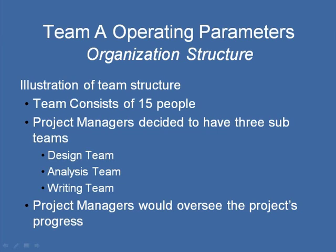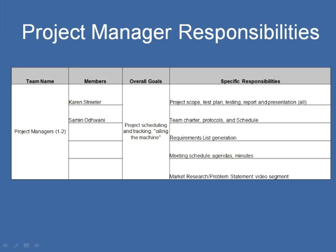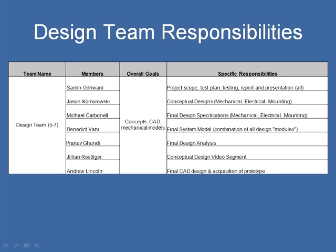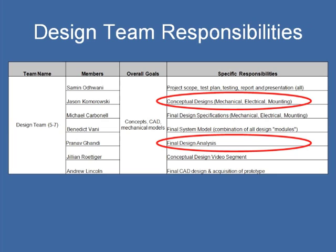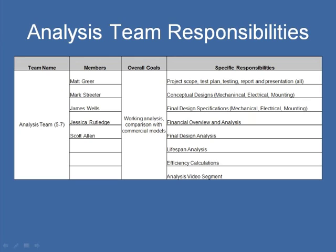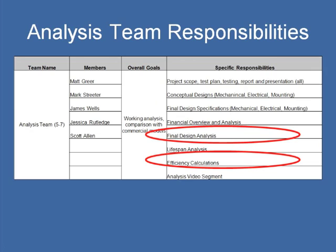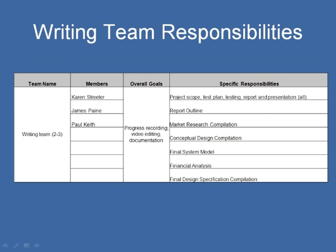The project managers would each be a part of these teams as well as oversee the project's progress. The most important thing for the project manager was to initially come up with a requirements list so that the group could develop a system catering to those requirements. The design team consisted of seven members, with primary tasks of analyzing the final design and developing the initial conceptual design. The analysis team consisted of five people, responsible for final design analysis and efficiency calculations, with overlapping responsibilities to ensure collaboration. The writing team of three members was responsible for compiling all work done by the rest of the group to track progress.